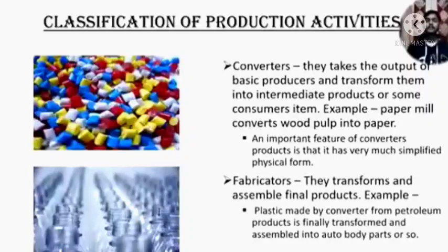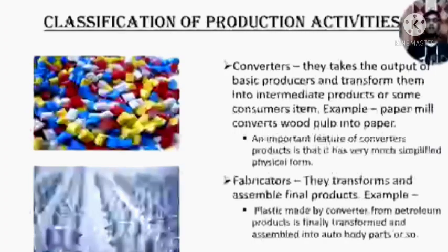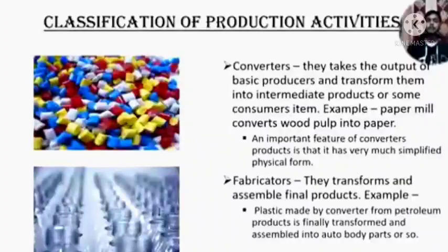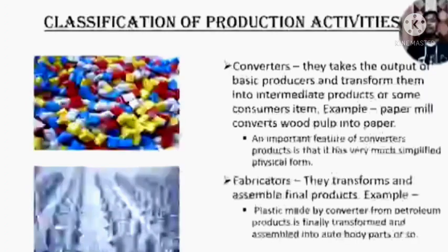The next one is fabricators. They transform and assemble the final product. For example, the plastic made by a converter from petroleum product is finally transformed and assembled into auto body parts and so on. It could also be used in plastic bottling.